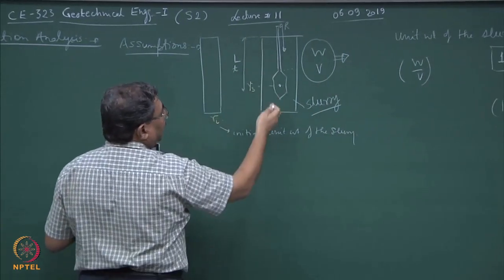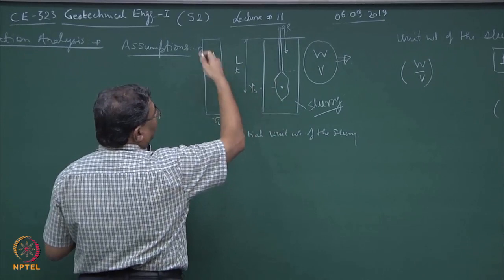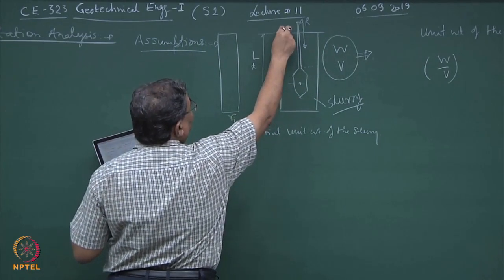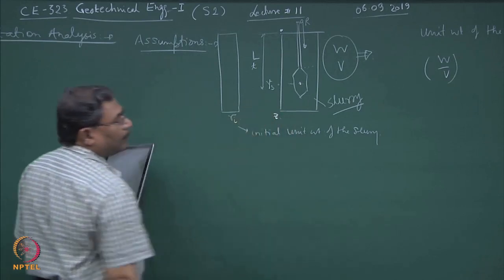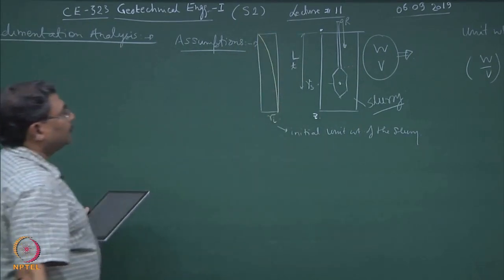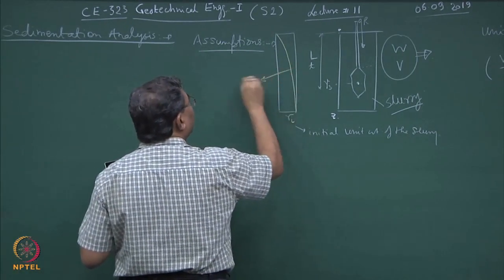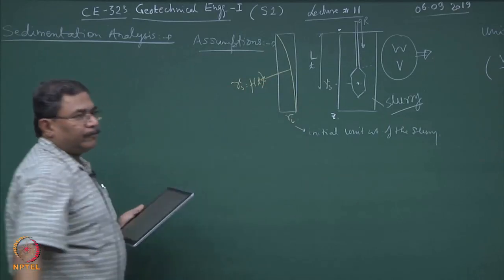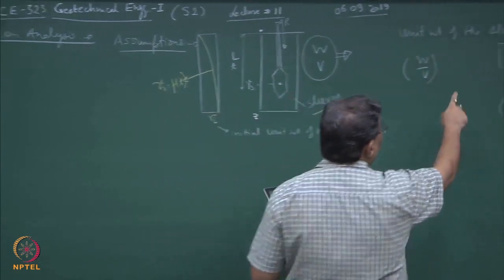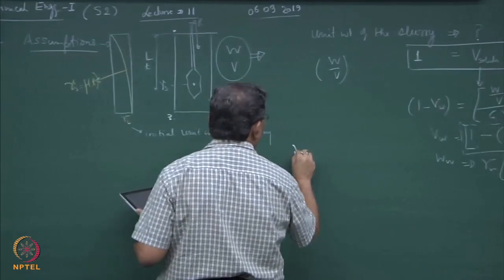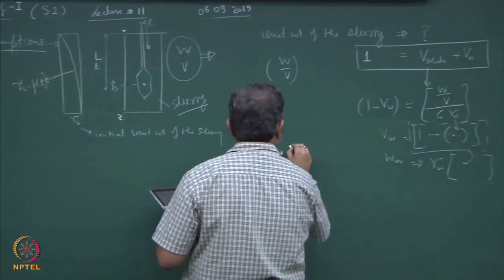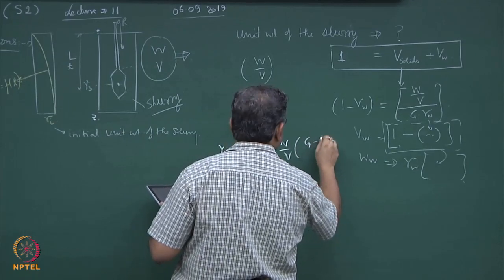Remember if I am using a hydrometer, I am getting the value of gamma_slurry corresponding to this point. If I leave this against gravity over a period of time, the density of the suspension is going to change from let us say 0 to z. This is how the profile of unit weight will look like — this is the time-dependent unit weight of the slurry. Going back to the calculation, I can define gamma_i equal to W upon V times (G minus 1) over G.